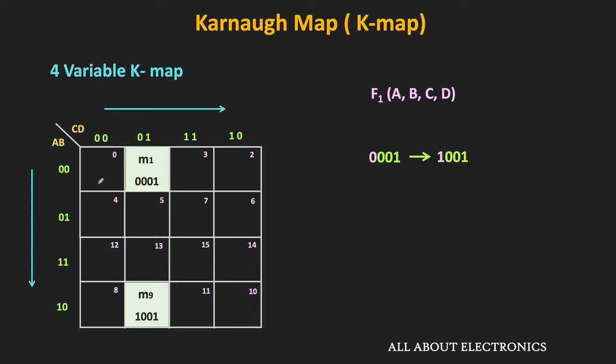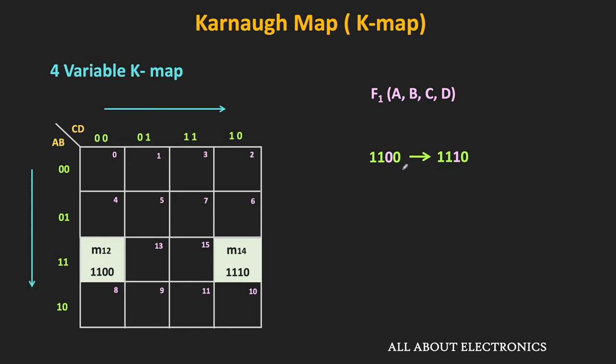The cells in the top row and the bottom row which are in the same column are also adjacent to each other. For example, minterm m1 and m9 are also adjacent, because only the MSB is changing between them. Similarly, the cells in the first and last column in the same row are also adjacent, because if you wrap the map, those cells will be adjacent. For example, minterm m12 and m14 are adjacent because only the second bit from the LSB is changing.